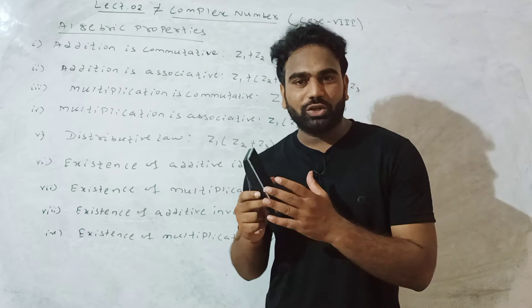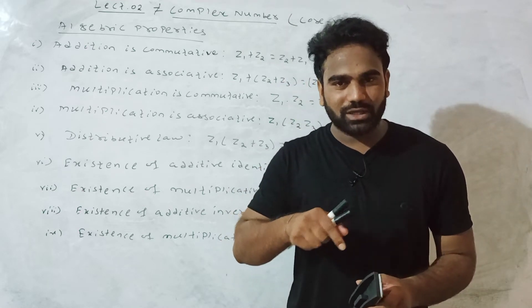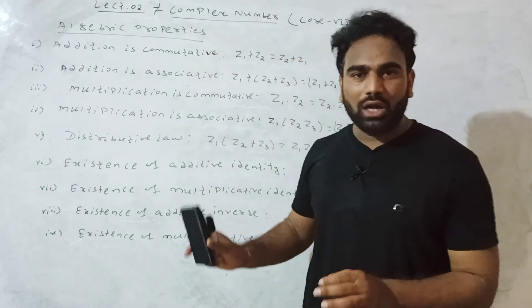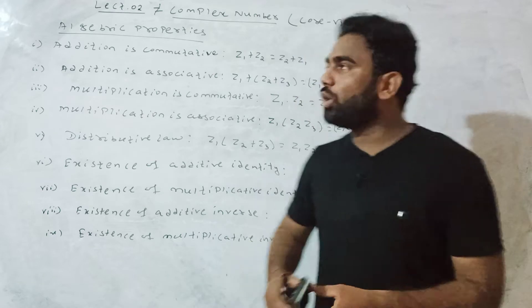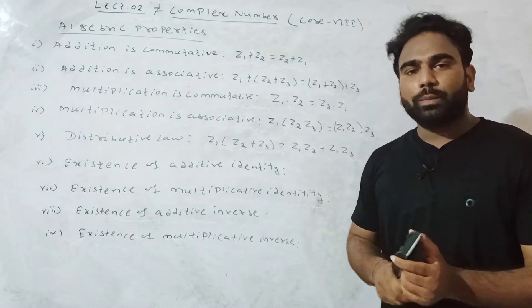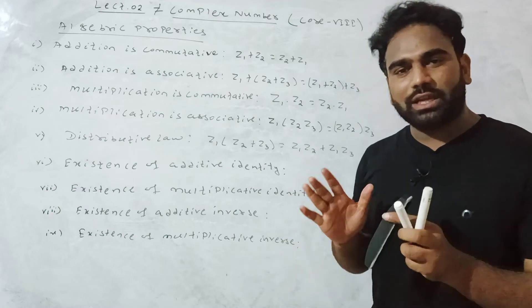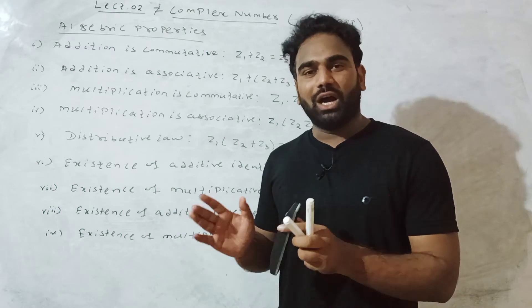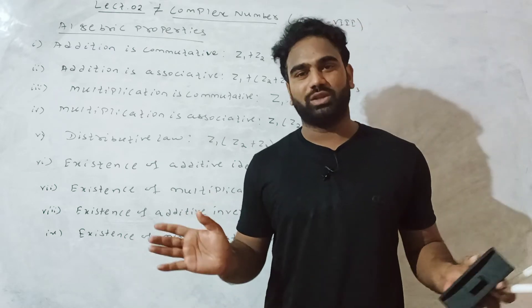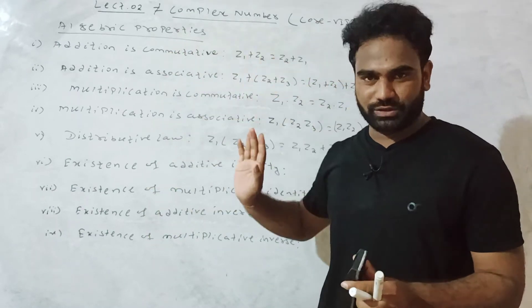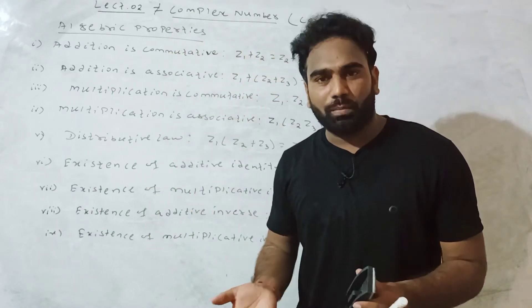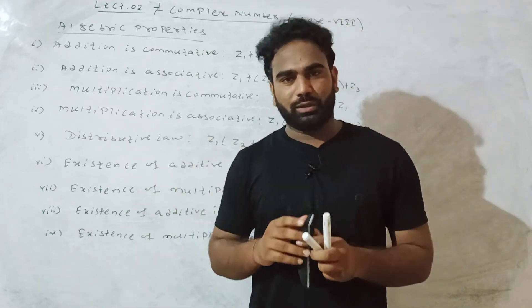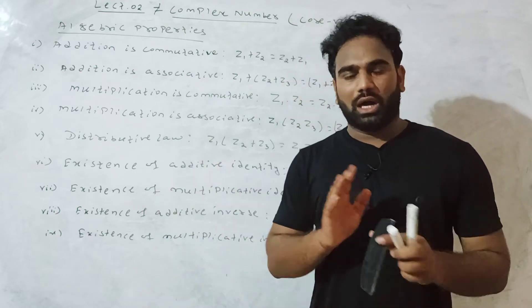This is lecture number two. If you haven't watched lecture one, the link is in the description box. This is from fourth semester unit one mathematical physics. The properties we'll discuss are: commutative, associative, distributive, existence of multiplicative identity, and existence of additive inverse.